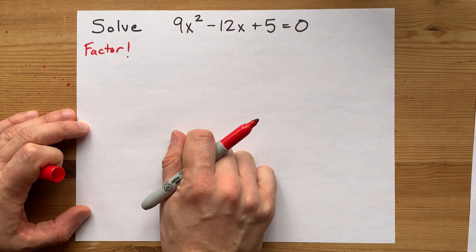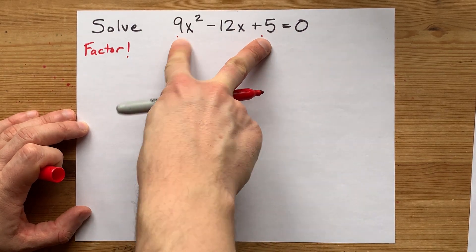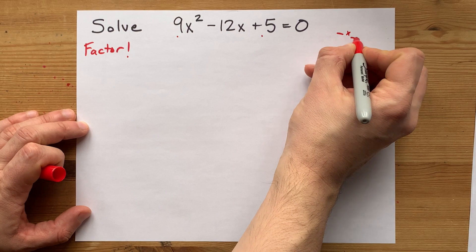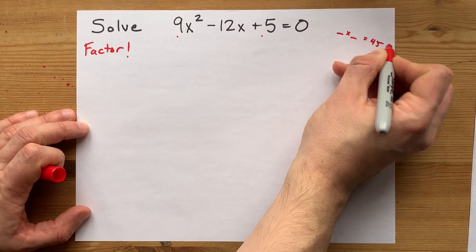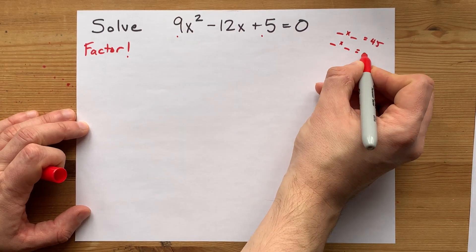The way that I teach factoring is that we're looking for two numbers that multiply to the same product that these make. We're looking for two numbers that multiply to positive 45, and we want those same numbers to add to give you negative 12.